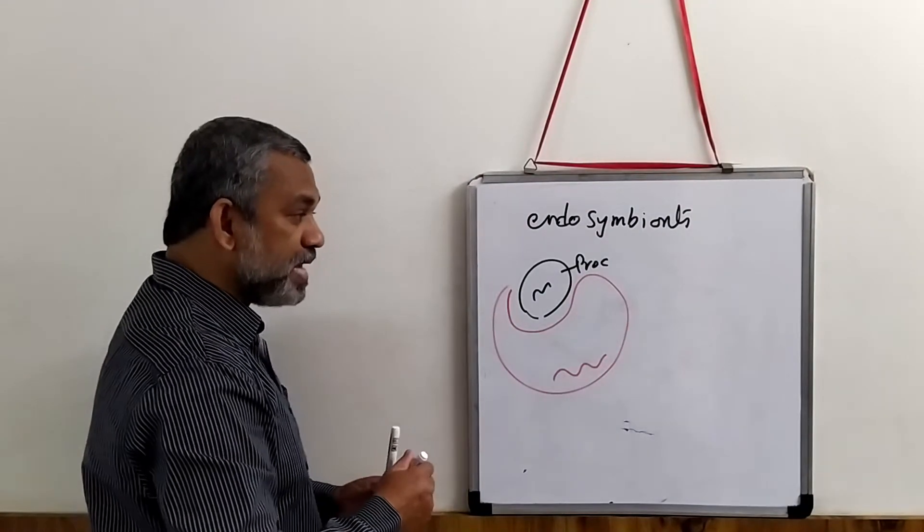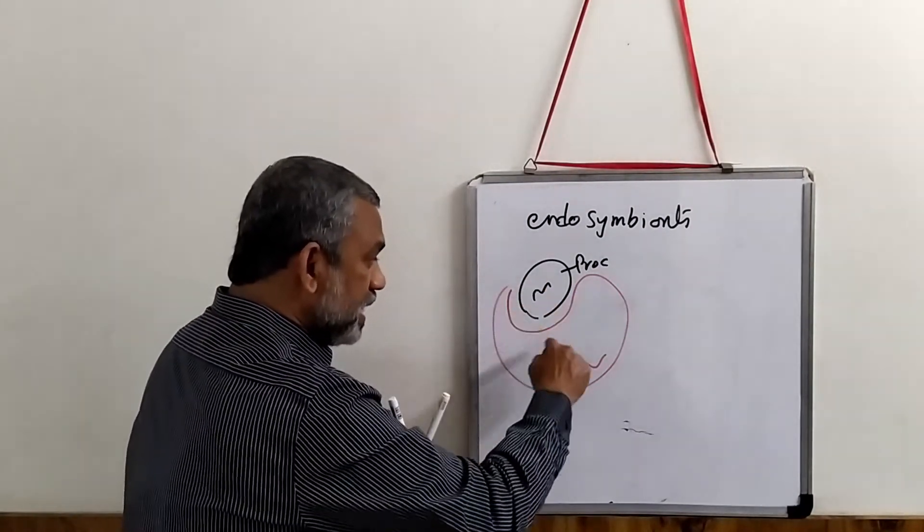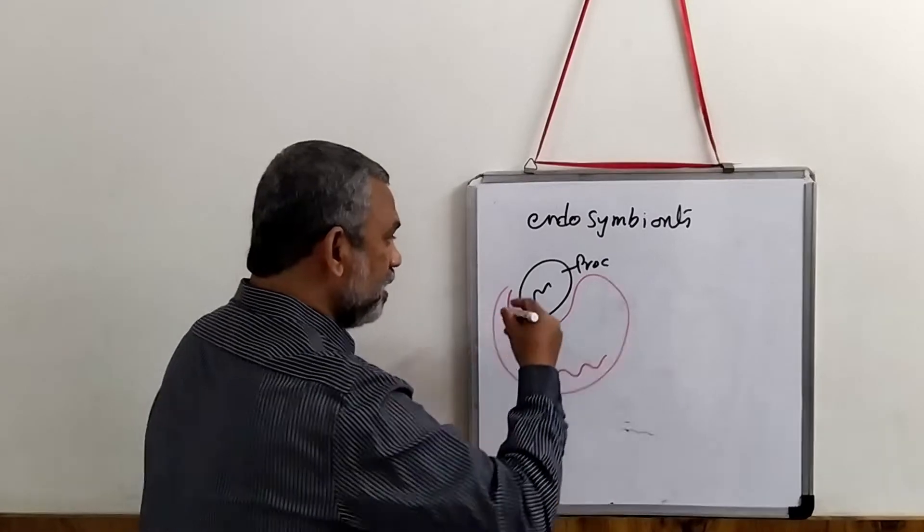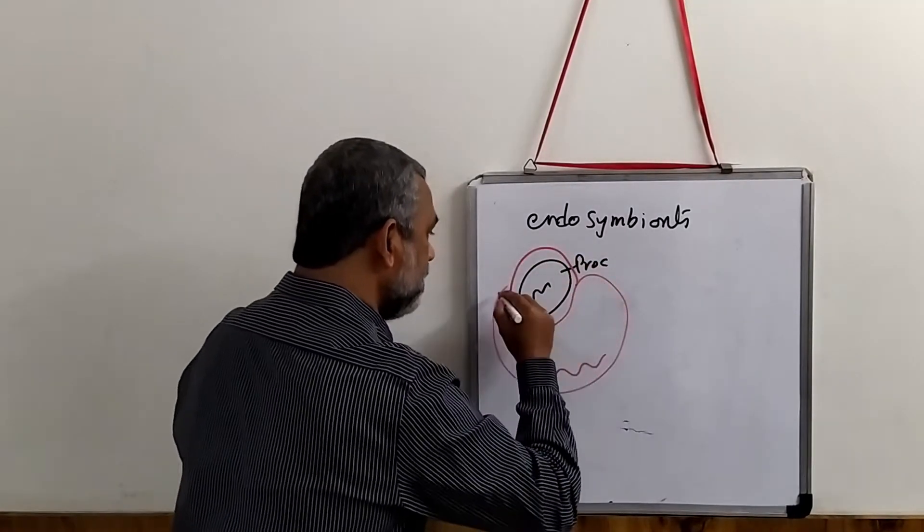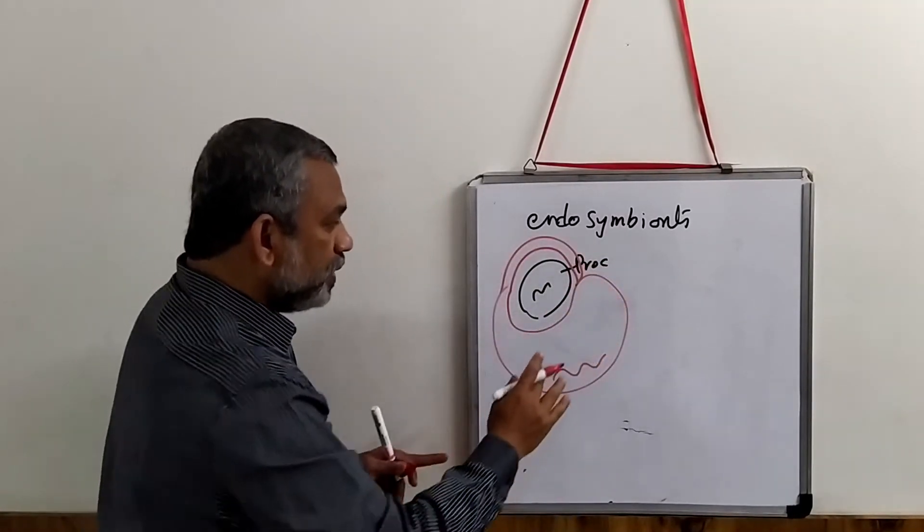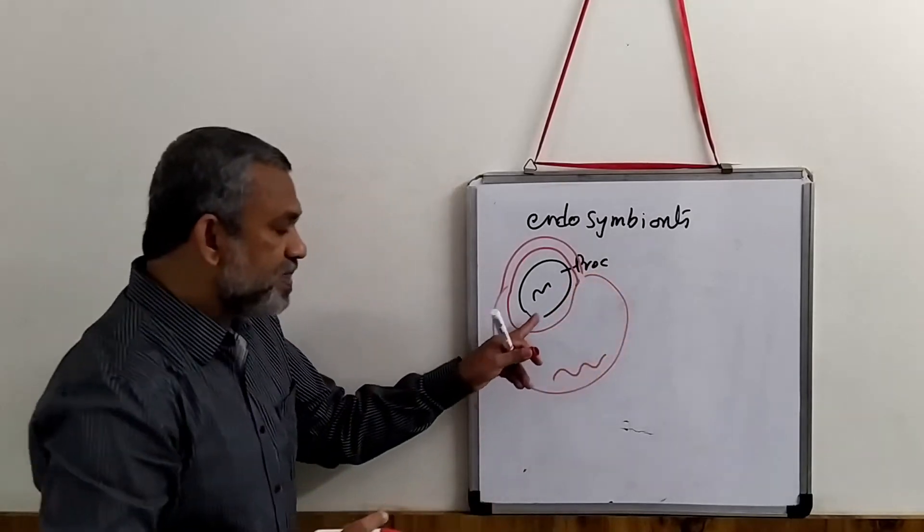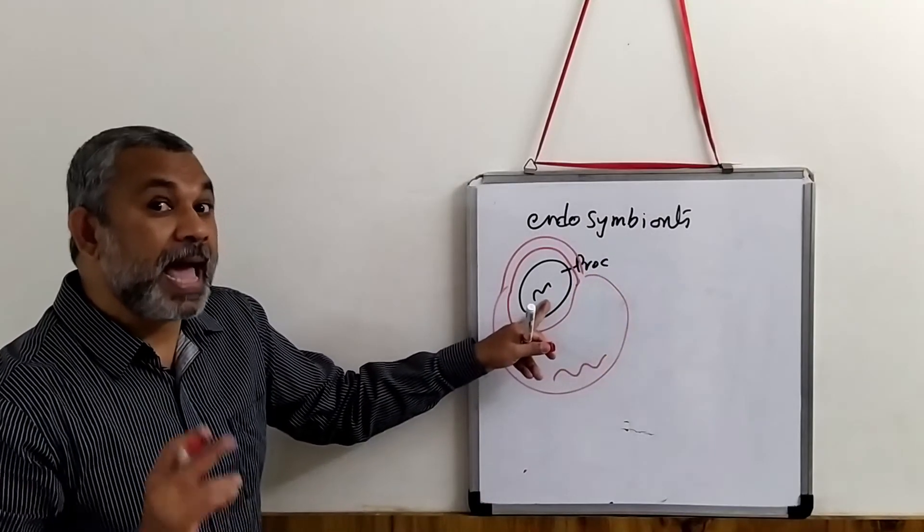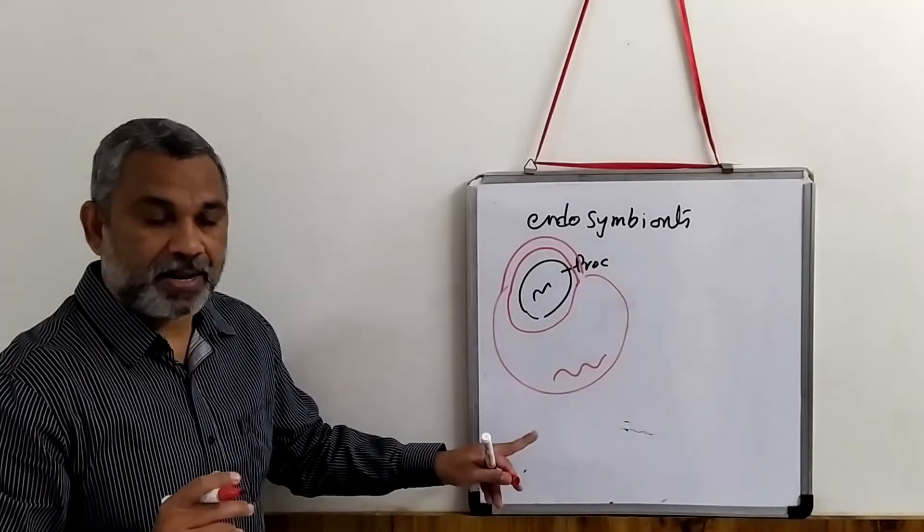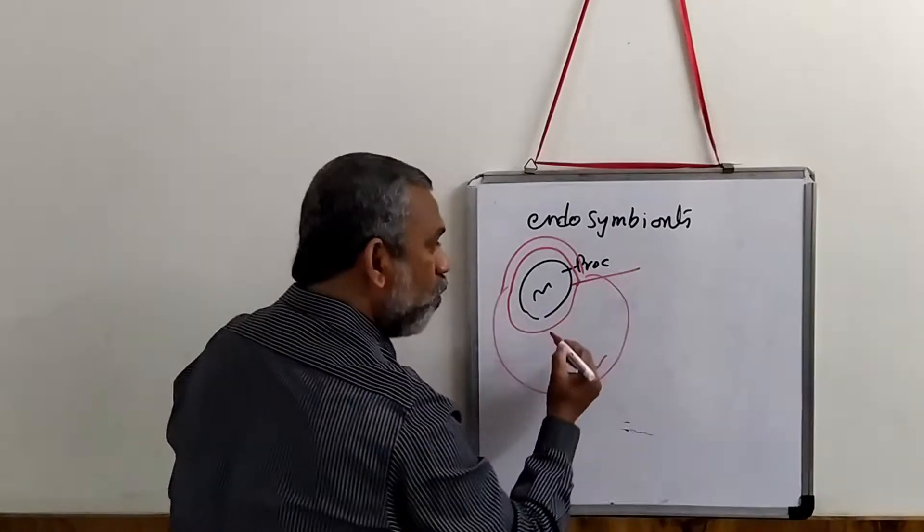Now what is likely to happen is this prokaryotic cell is engulfed. Now it is very evident that this cell has two membranes, one of its own and another one. This is the first membrane, and the second membrane is from the invagination of the prokaryotic cell which engulfed it.